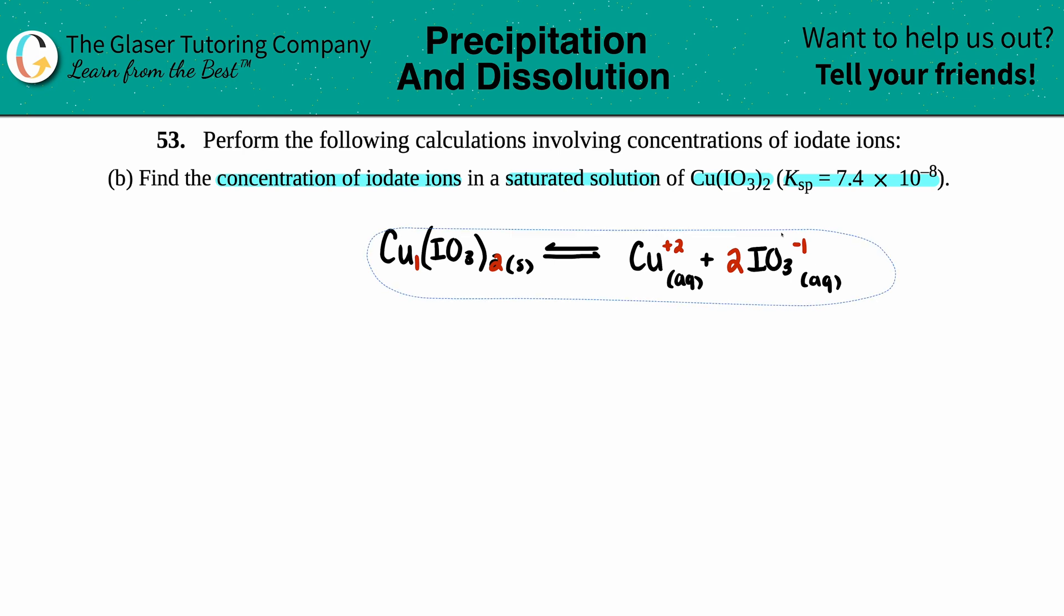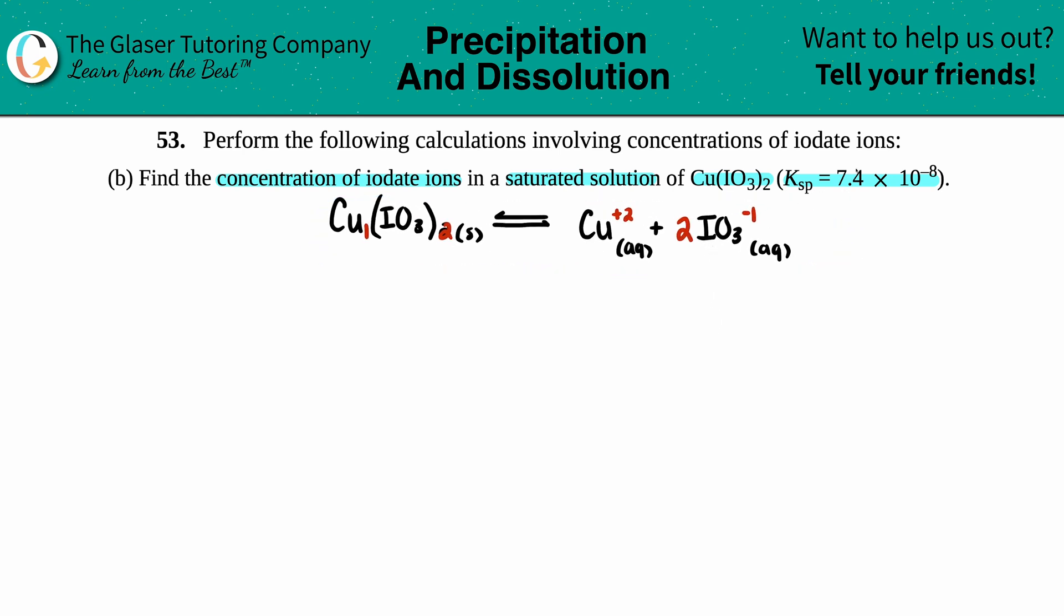Now the next thing I'm going to do is write the specific Ksp equation for our balanced equation. Remember, the general one is Ksp equals the products raised to the coefficients. In our case, we had Ksp equals the two products, so I have concentration of Cu2+ times the concentration of IO3- and since there is a two here I have to take this and square it. But now I don't know what these values are. The only thing they told me was the Ksp was 7.4 times 10 to the negative eighth.